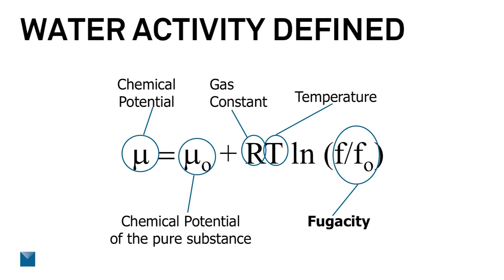Now, mu sub O — which is the chemical potential of a pure substance, so for our case this would be pure water — R the gas constant is a constant, and T, temperature, is held constant as well. The only thing that's really dependent here to determine the energy of the water is this last term called fugacity.